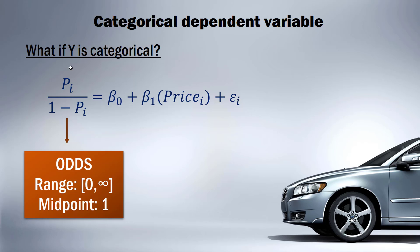P divided by 1 minus P gives us the odds: P is the probability of sale and 1 minus P is the probability of not selling. If the probability of sale is 50%, we get 0.5 over 0.5, which equals odds of 1, or 1 to 1. If the probability is 80%, we get 0.8 over 0.2, giving odds of 4, or 4 to 1. The odds have a lower limit of 0 and an upper limit of infinity.